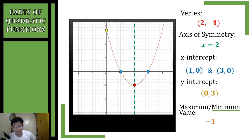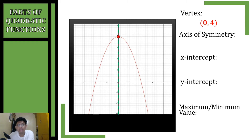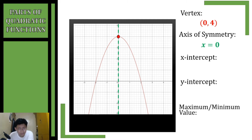Let's have another example. For this quadratic function, the vertex is located at (0, 4). The axis of symmetry intersects the vertex, so taking the x-coordinate of the vertex, our axis of symmetry is x = 0. For the x-intercepts, they are located at (-2, 0) and (2, 0).